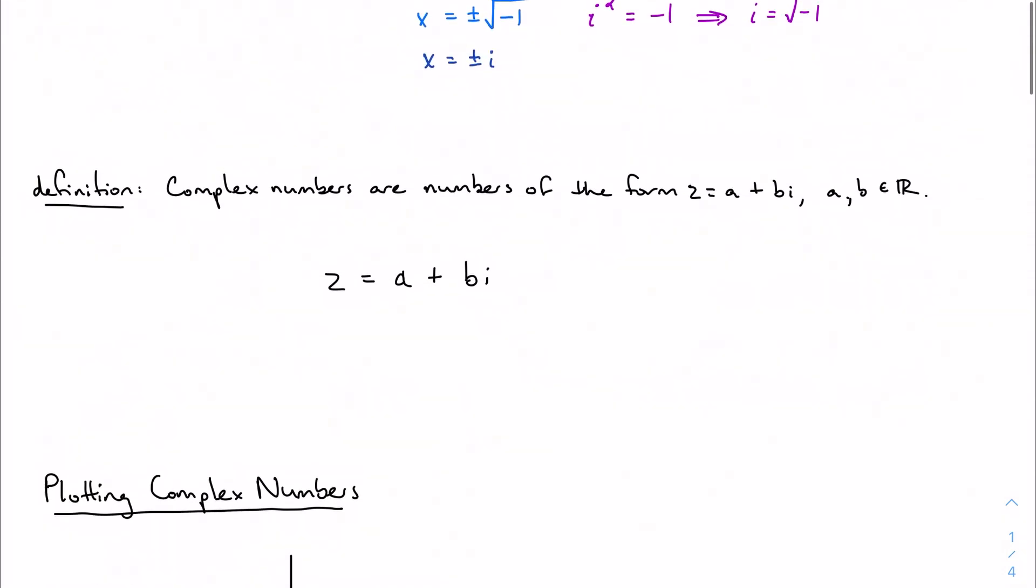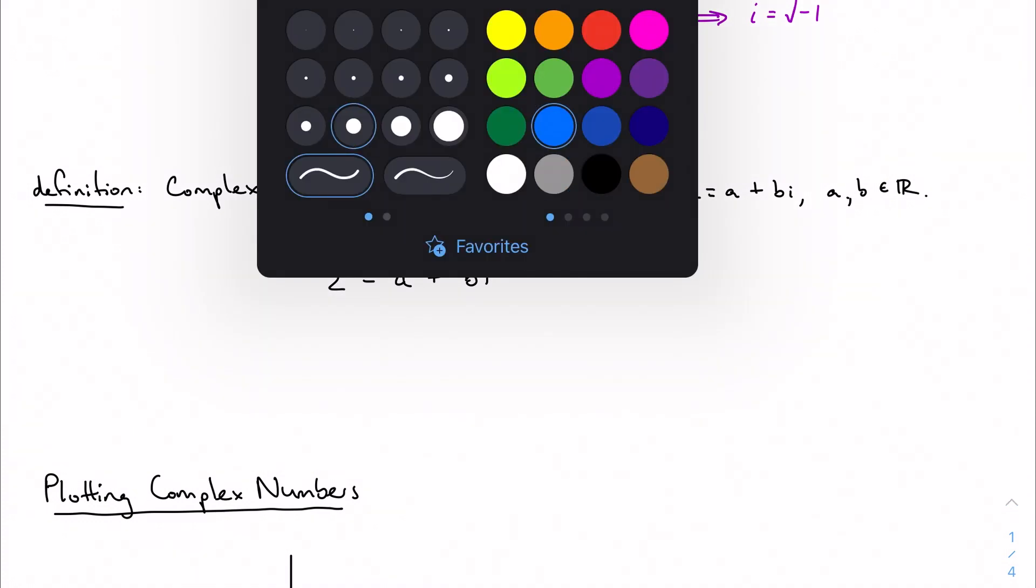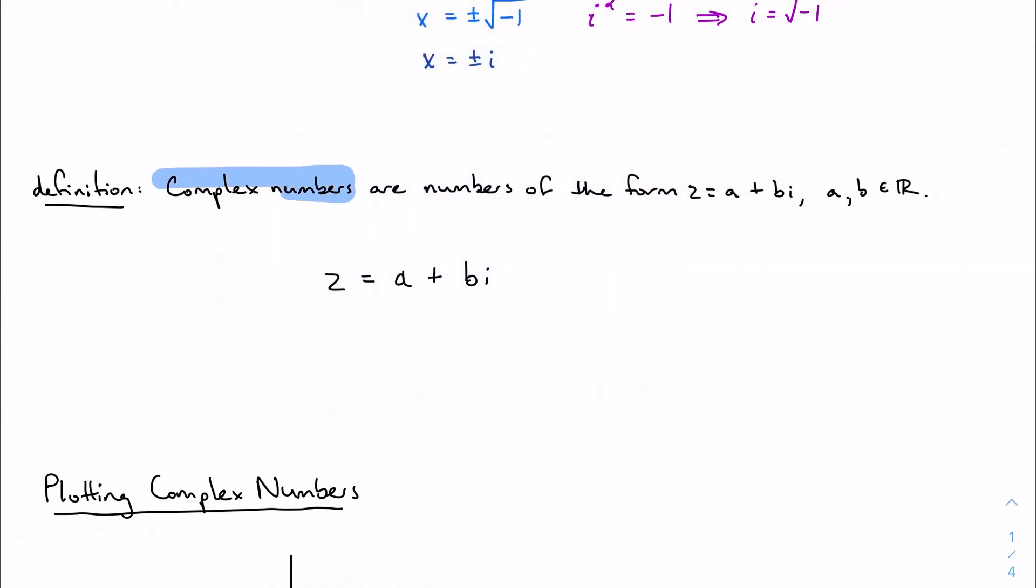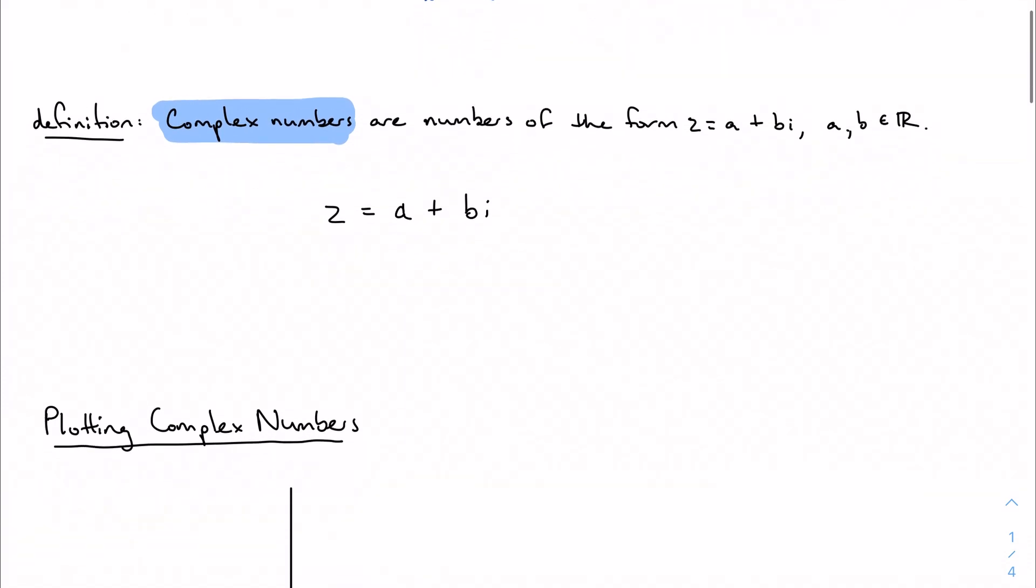When we talk about complex numbers, we're talking about numbers that are of the form a plus bi, where a and b are real coefficients, and z is just our way of talking about a complex number. We call this notation Cartesian form, after René Descartes.